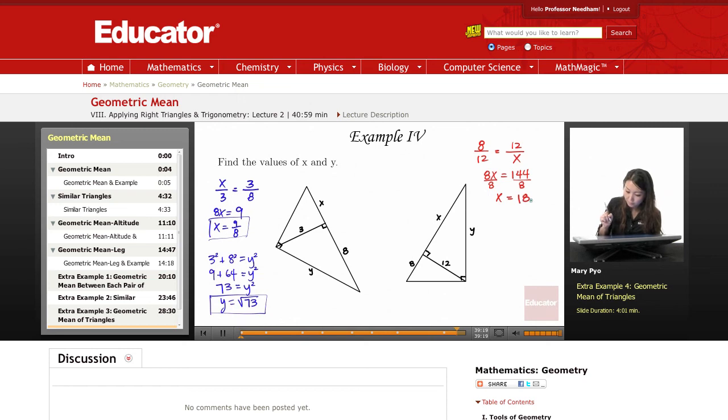And then here, to find the y, same thing. We know that since this is 18, we can say that Pythagorean theorem, 12 squared plus 18 squared is equal to y squared. Or we can use a theorem. Let's just use a theorem.